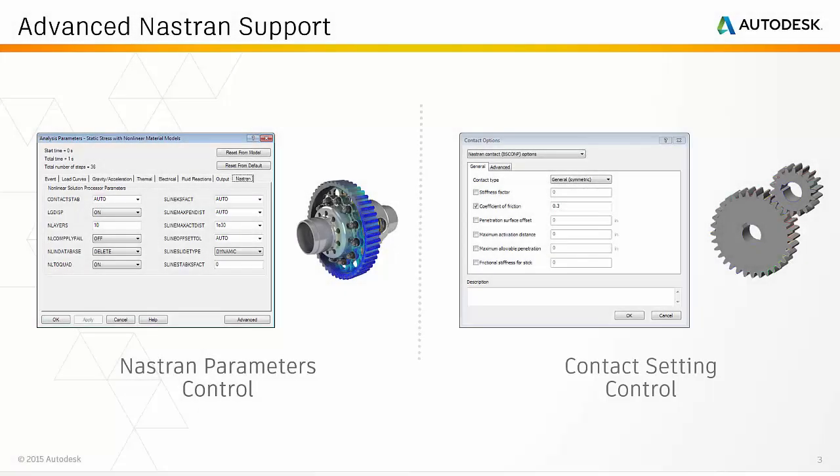As you may be well aware, back in Simulation Mechanical 2015 we introduced the Autodesk NASTRAN solvers and the Autodesk NASTRAN editor. This initial functionality covered several analysis types. In the 2016 release we significantly expanded our NASTRAN capabilities, supporting several new nonlinear material models, nonlinear loads, constraints applied to local coordinate systems, and incremental results for nonlinear analyses performed using the NASTRAN solvers.